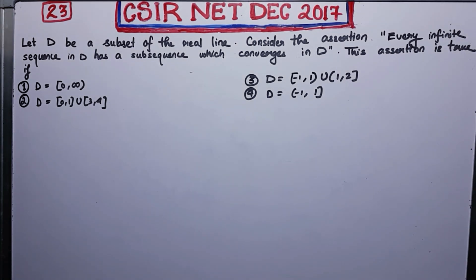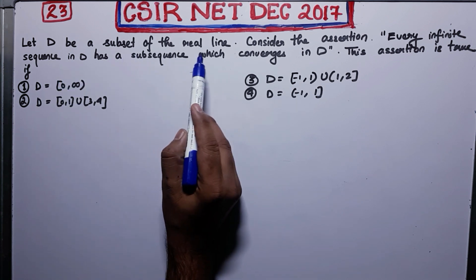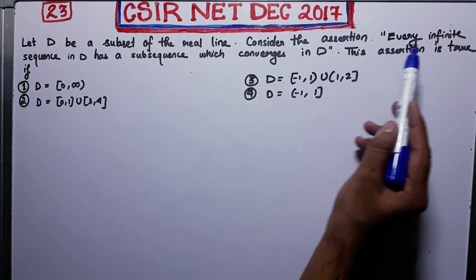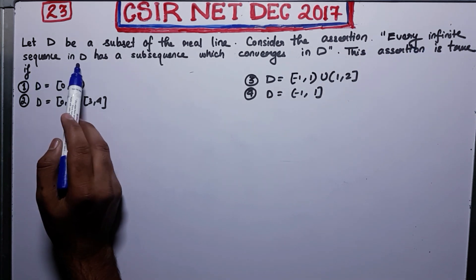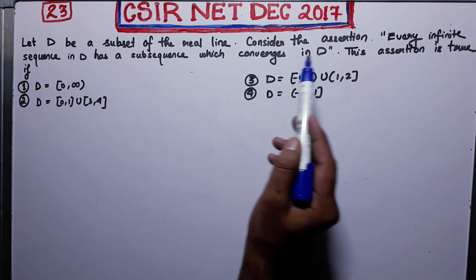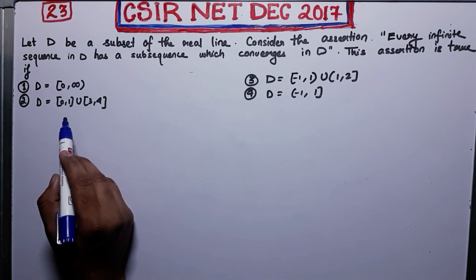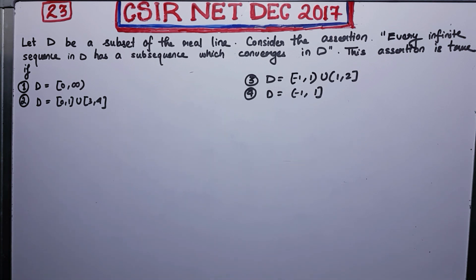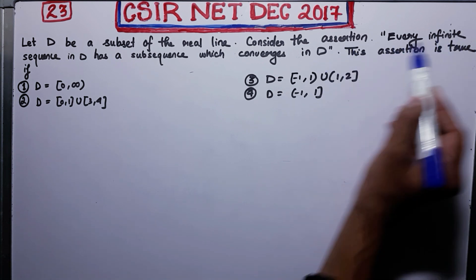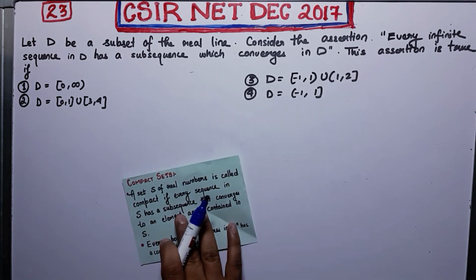Welcome back guys. I am here to solve problem number 23 of CSIR Net December 2017. Let us first read this question: let D be a subset of the real line. Consider the assertion: every infinite sequence in D has a subsequence which converges in D. This assertion is true if D equals which of these four options.